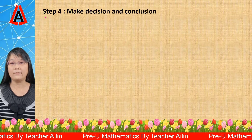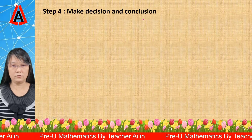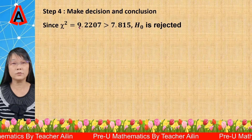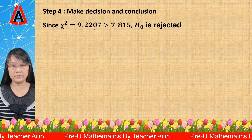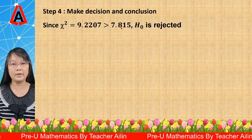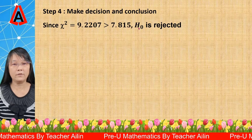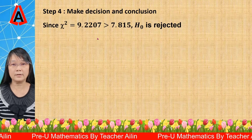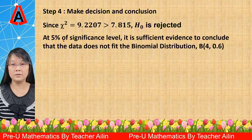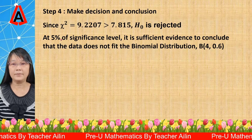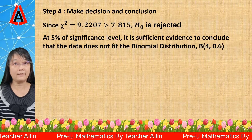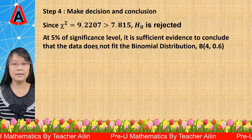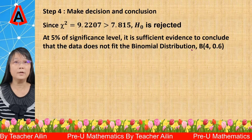For step 4, make decision and conclusion. Since the chi-squared we calculated is 9.2207, which is greater than 7.815, H₀ is rejected. At the 5% significance level, there is sufficient evidence to conclude that the data does not fit the binomial distribution.